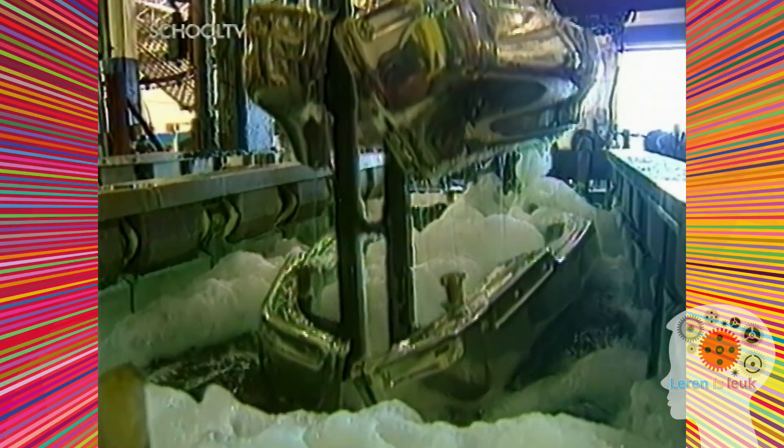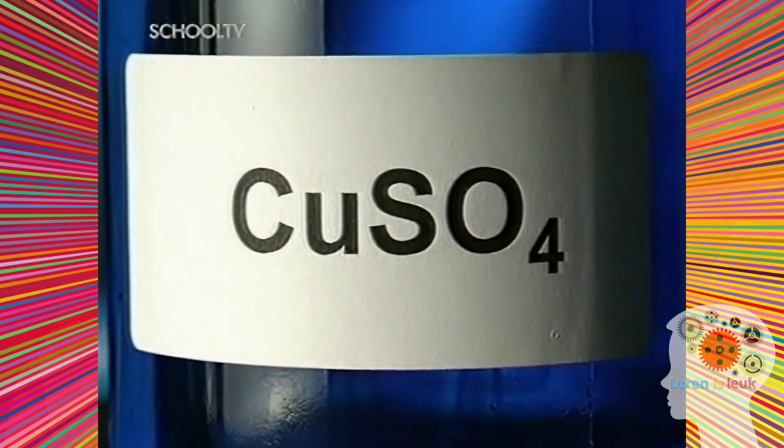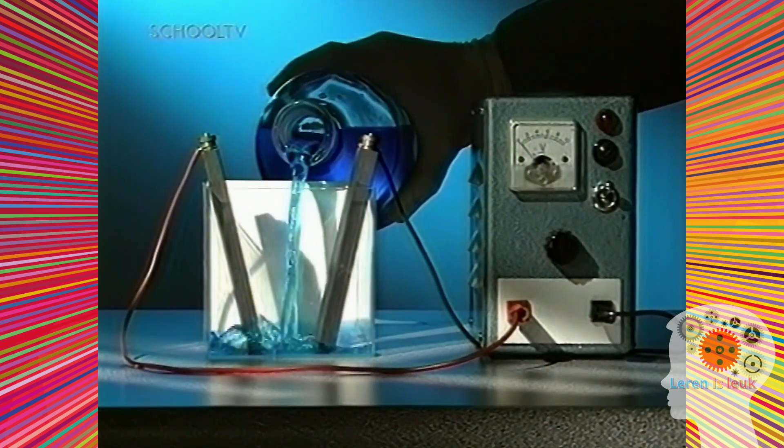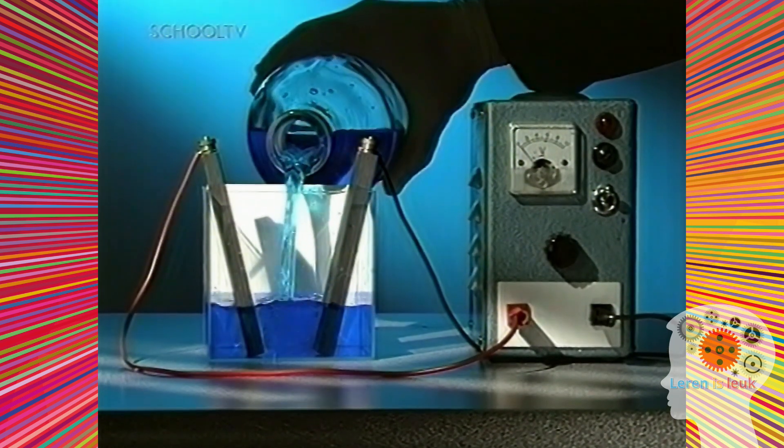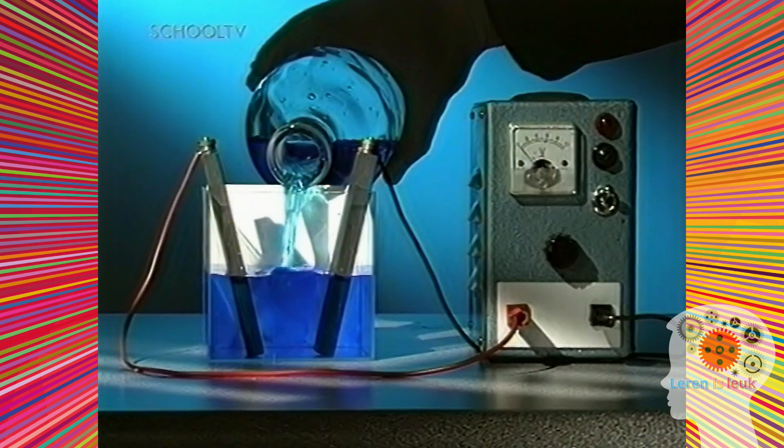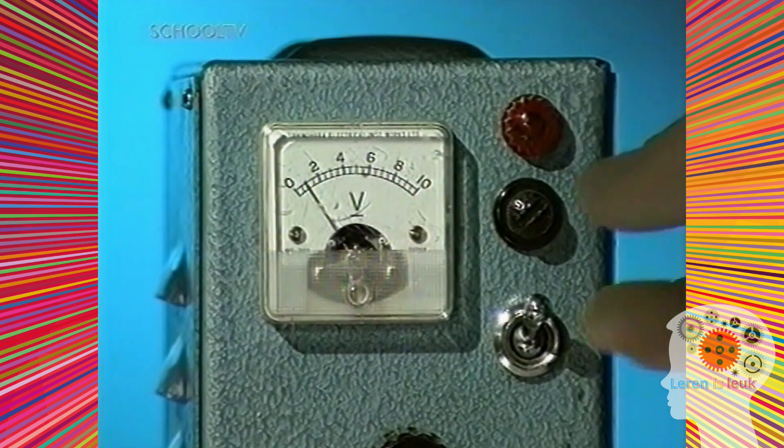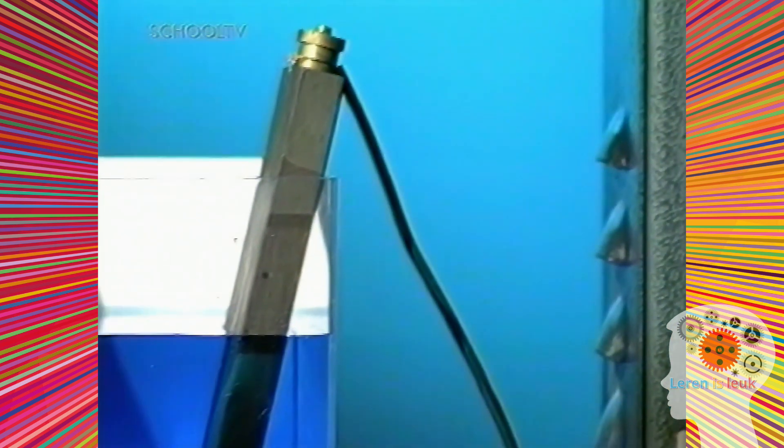Galvaniseren wordt gebruikt om metalen tegen roest te beschermen en om artikelen er mooier uit te laten zien. Verkoperen kan gemakkelijk in het laboratorium worden gedaan. Er is alleen maar een kopersulfaat oplossing voor nodig en een manier om daar elektrische stroom door te leiden. Twee koolstofelektroden, aangesloten op een stroombron, worden in de vloeistof gezet. Zet de stroom aan, de reacties komen op gang en de stroom loopt.